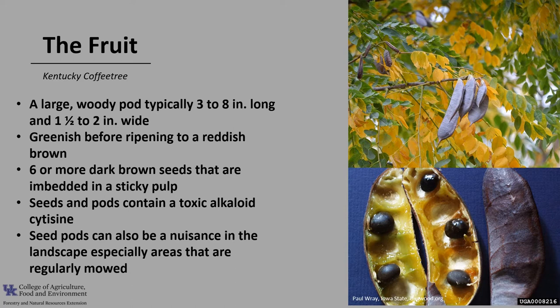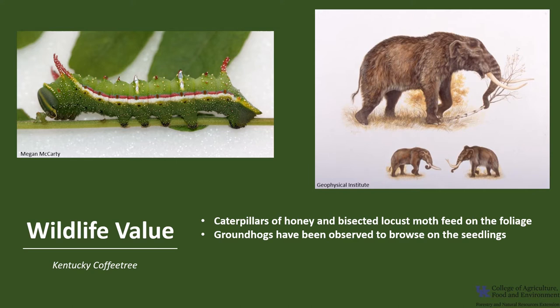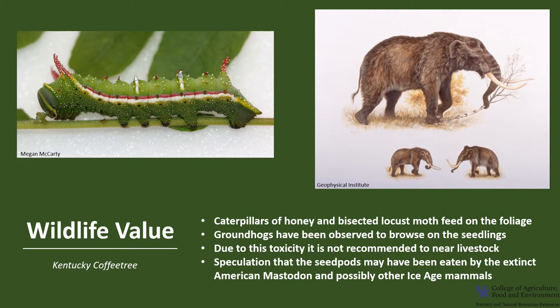The seed pods can be a nuisance in the landscape, especially in areas that are regularly mowed — they are very hard and can be shot from a lawnmower running over the fruit. Kentucky coffee tree would not be categorized as an important wildlife tree today. The caterpillars of honey locust moth and the bisected honey locust moth feed on the foliage, and groundhogs have been observed to occasionally browse the seedlings, but other mammals avoid the tree and the fruit, possibly due to the toxicity. Due to this toxicity, it is recommended not to have this tree where there is livestock. There is some speculation that the seed pods may have been eaten by the extinct American mastodon and possibly other ice age mammals.